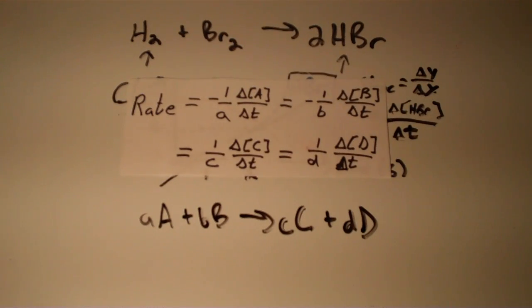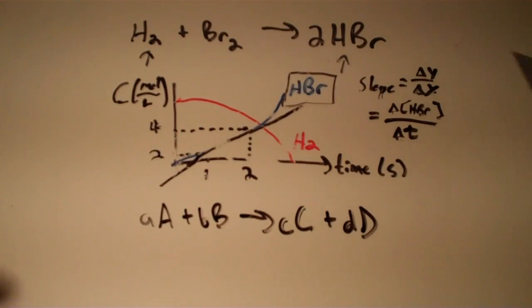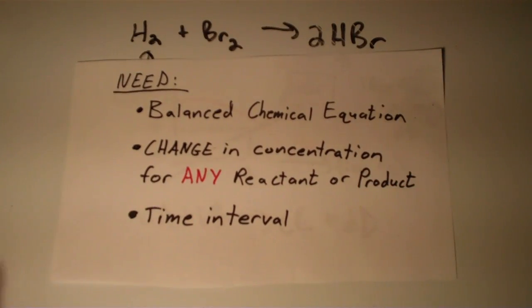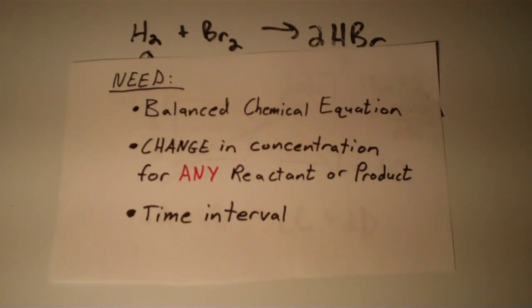In general, the three things that you need to determine the rate of a chemical reaction are: the balanced chemical equation, the change in concentration for any reactant or product—doesn't matter which, just one will do—and lastly, you need a time interval.